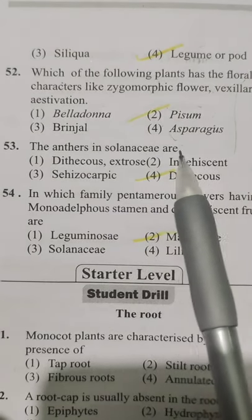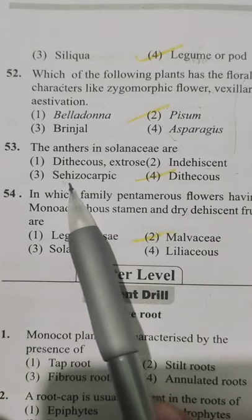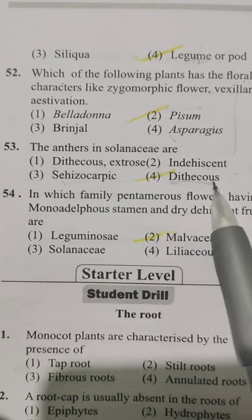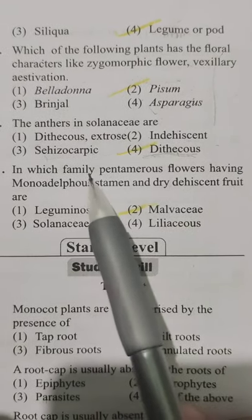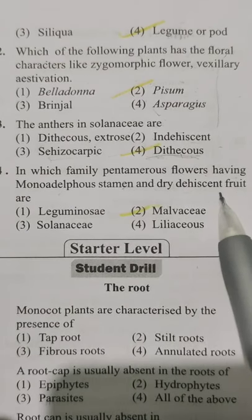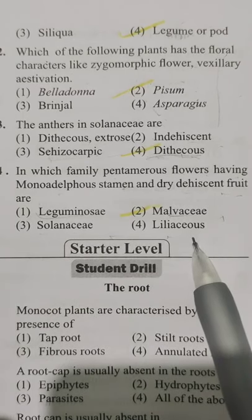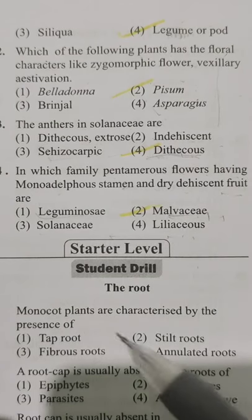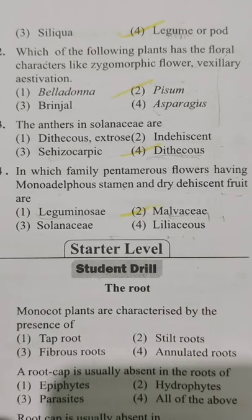The anthers in Solanaceae are — Option 1 dithecous extrorse, Option 2 indehiscent, Option 3 cohesive carpel, Option 4 dithecous. The anthers in Solanaceae are dithecous — Option 4. In which family are pentamerous flowers with monadelphous stamens and dry dehiscent fruit found? Option 1 Leguminosae, Option 2 Malvaceae, Option 3 Solanaceae, Option 4 Liliaceae. The answer is Option 2, Malvaceae. Please solve the questions given in the student drill.